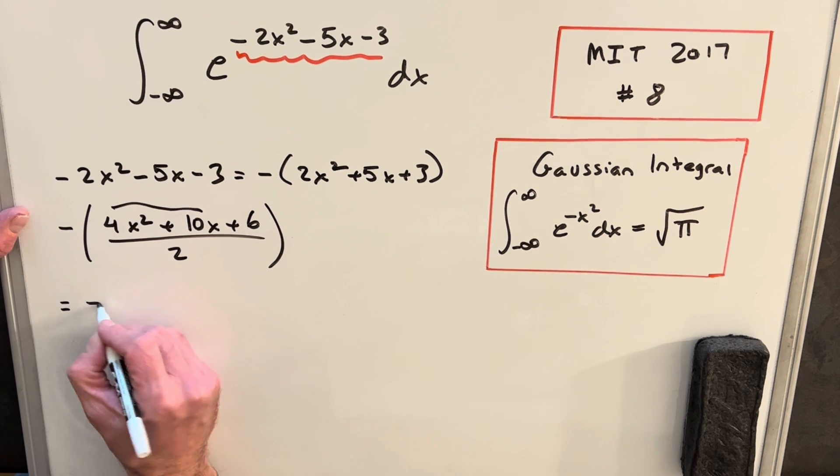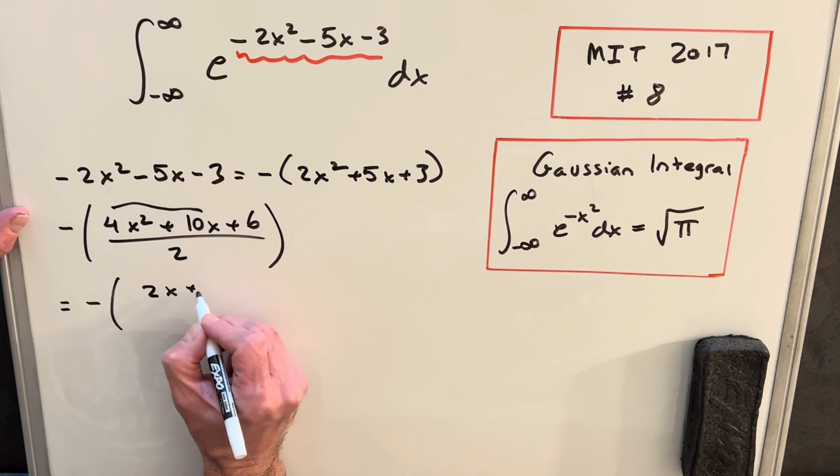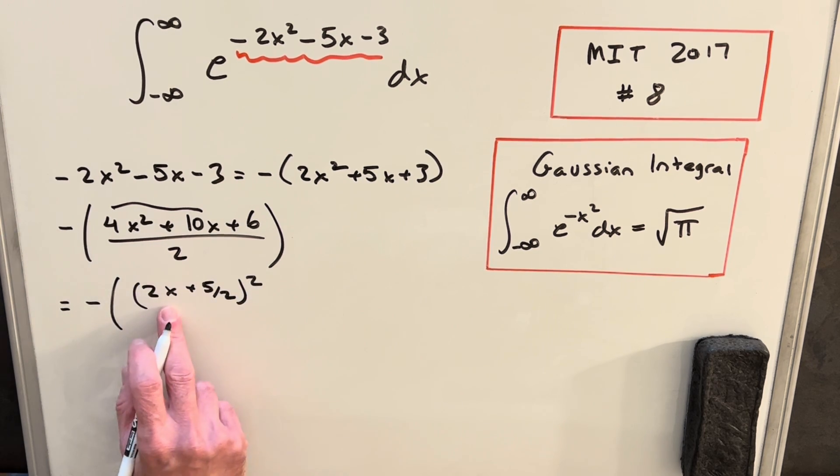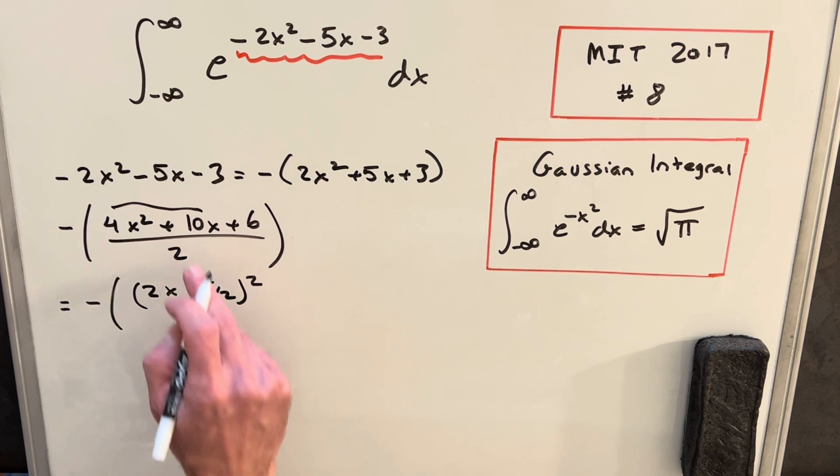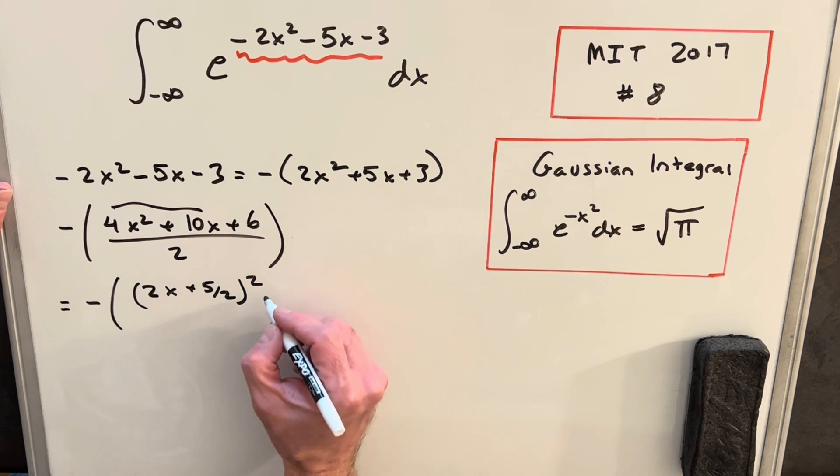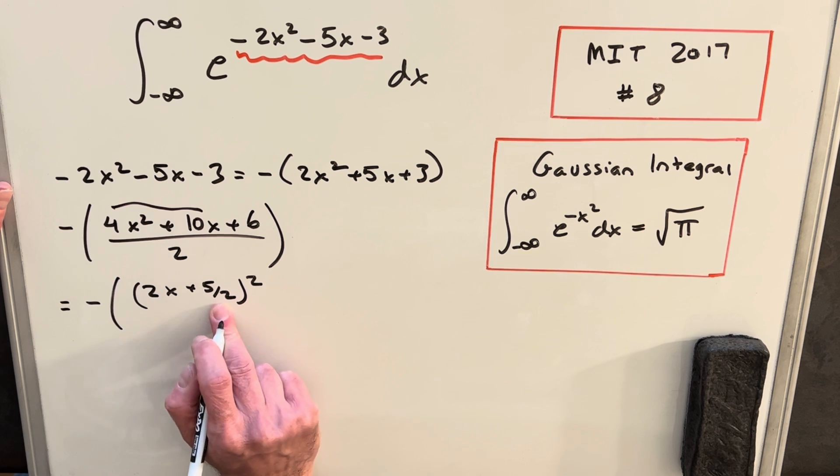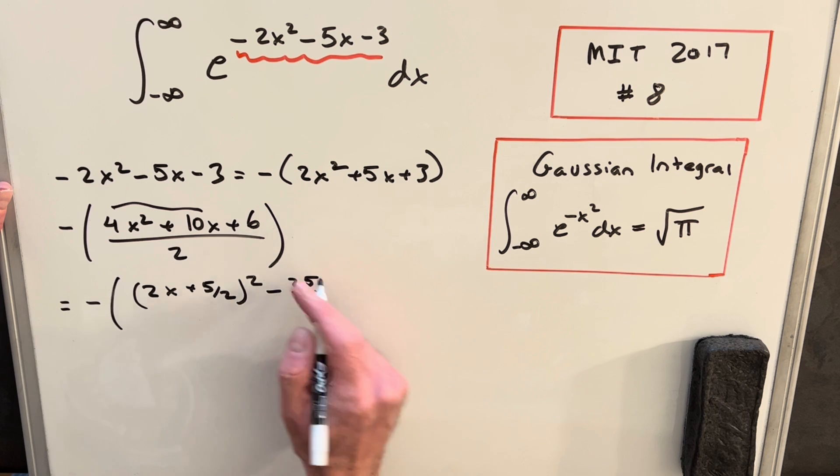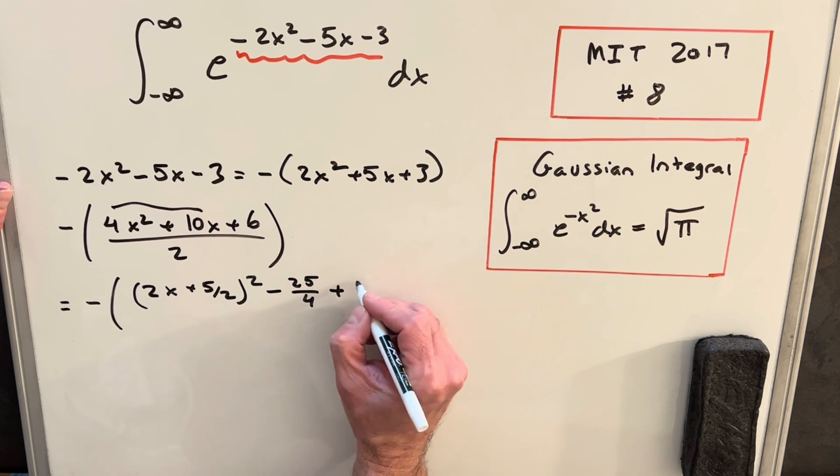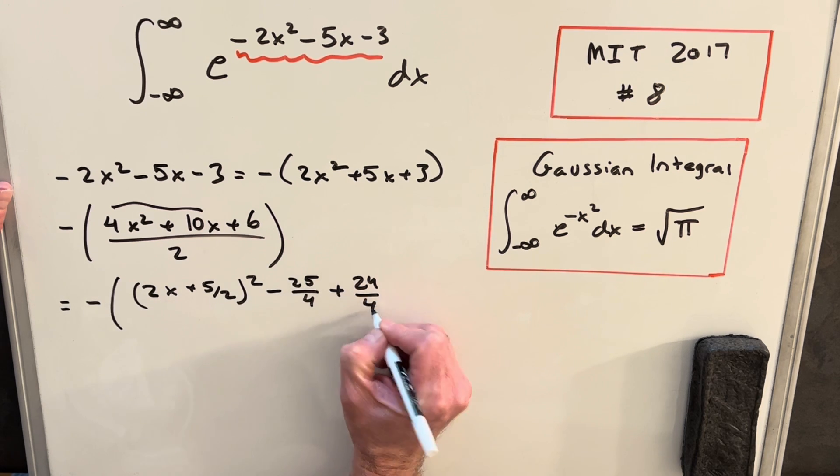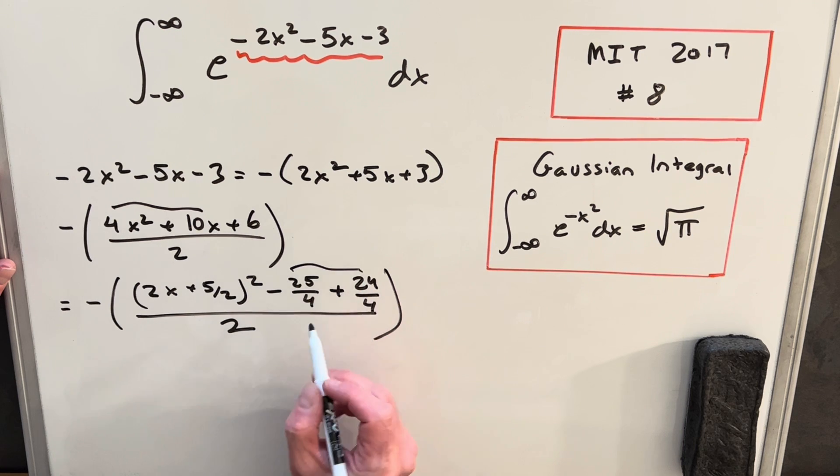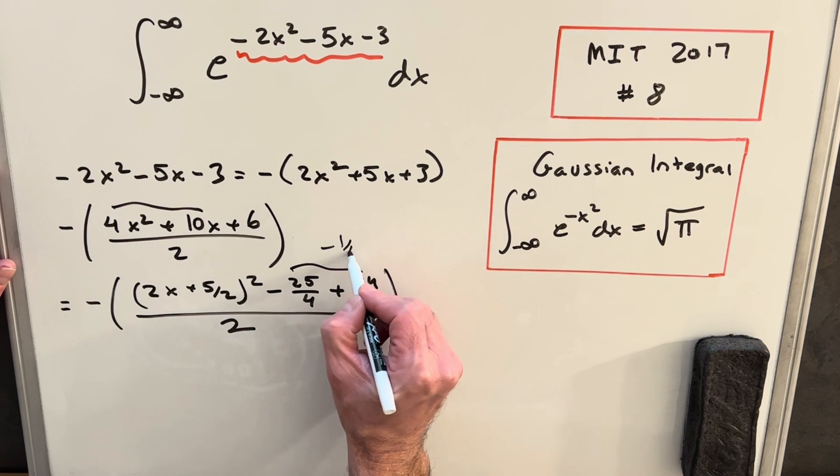So then completing the square on the numerator, we'll rewrite this as 2x plus 5 halves squared. Just noticing when we square that, we get 4x squared plus our 10x. But then this is going to add a 25 over 4 when we square this term. So we'll just subtract that off. And what I'm going to do is I'm going to write 6 that we're adding here, we'll write this as 24 over 4 because we know we want to get a common denominator there. And this is going to all be over 2. Then from here we can see when we combine these, we're going to just get a minus 1 over 4 right there.